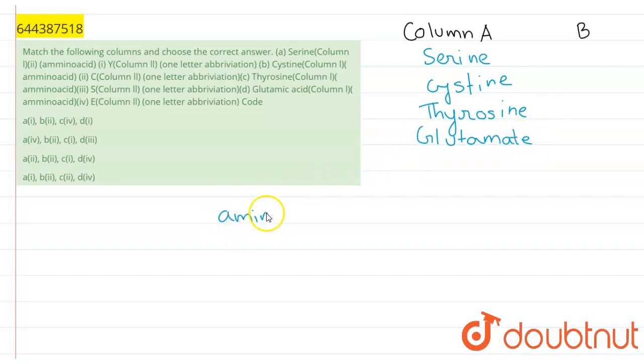So on column A we have the names of amino acids, and on column B we have several letters. At first we have Y, then we have C, then we have S, and we have E.